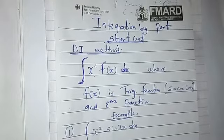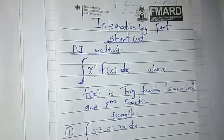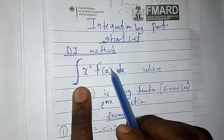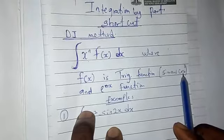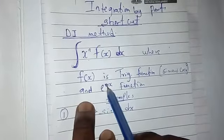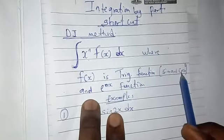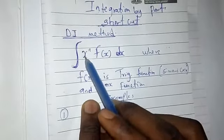Welcome back. Today I'm going to talk on integration by parts using shortcuts — the DI method, which is the Differentiation and Integration method. We use it for solving integration by parts of the form x raised to the power of n times f(x), where f(x) is a trigonometric function like sine or cosine, or an exponential function, while x is an algebraic function.